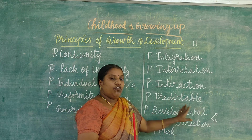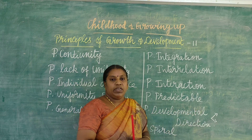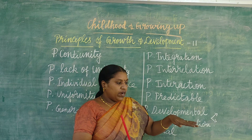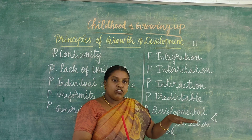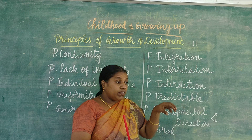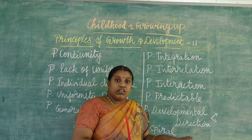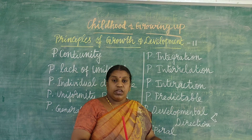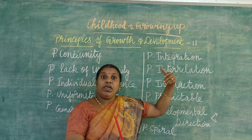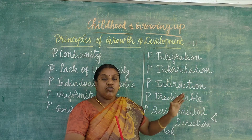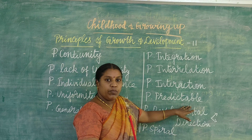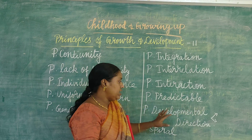Then the principle of predictability. Predictable means we can predict: if at this age a child is of a certain height, we can say when they mature they will be of a certain height. If at 3 years a child has a certain level of intelligence, then at age 10, they might have a predictable level of intelligence. So growth and development can be predicted — that is the principle of predictability.